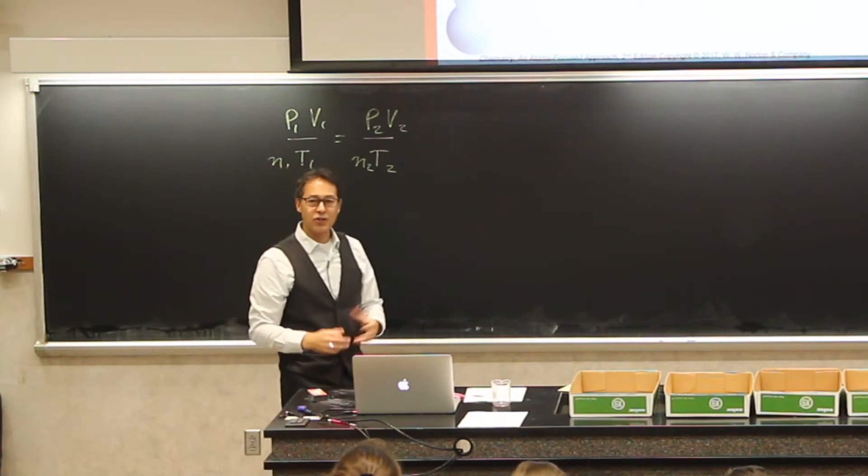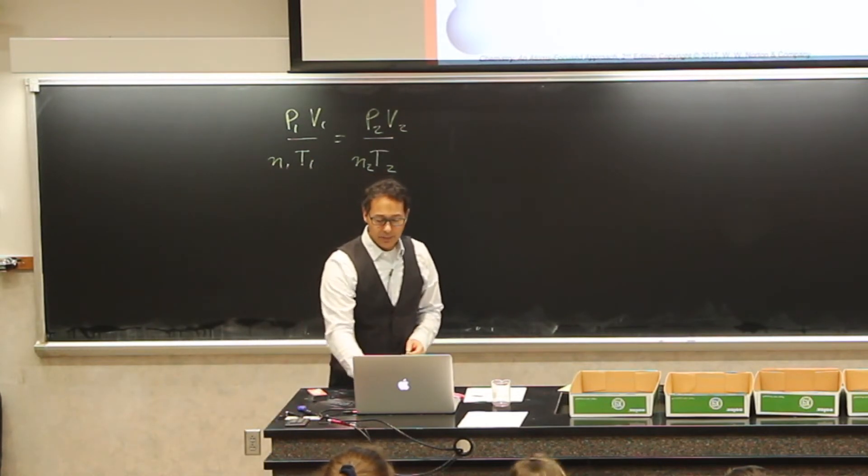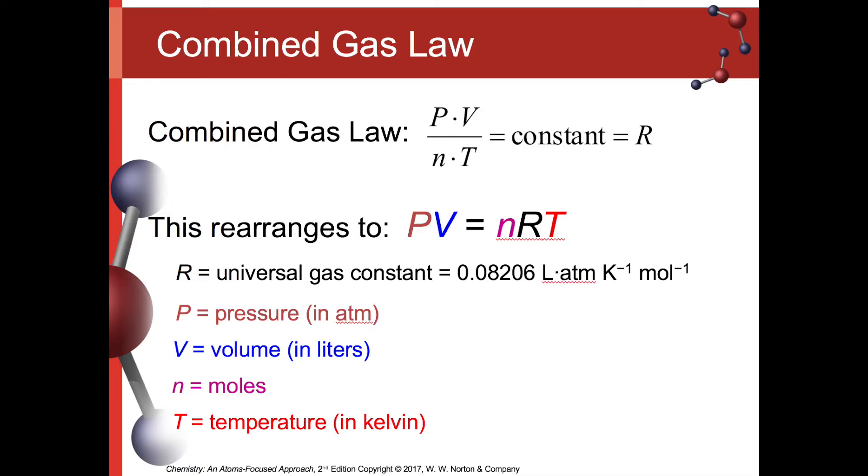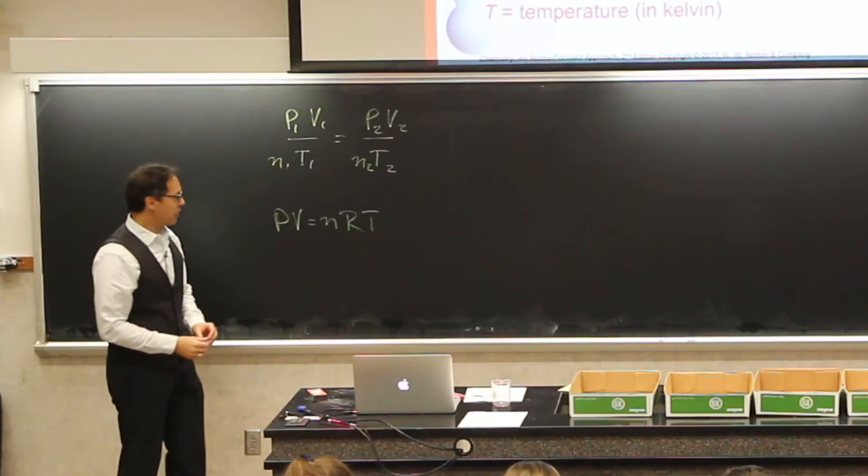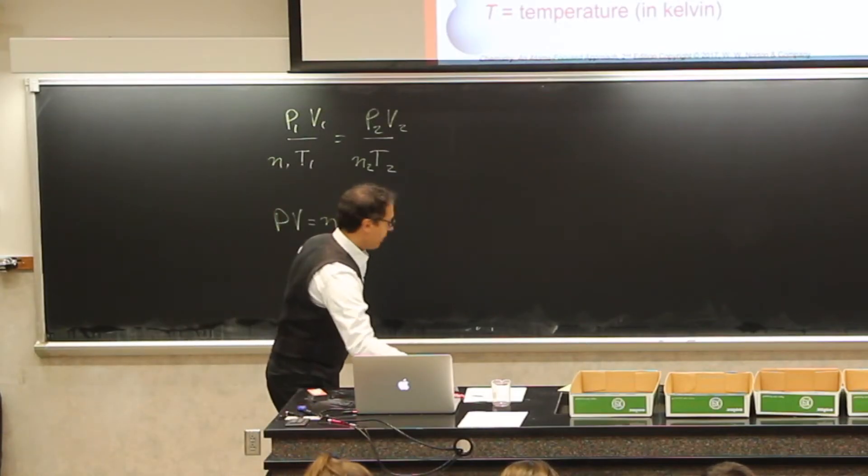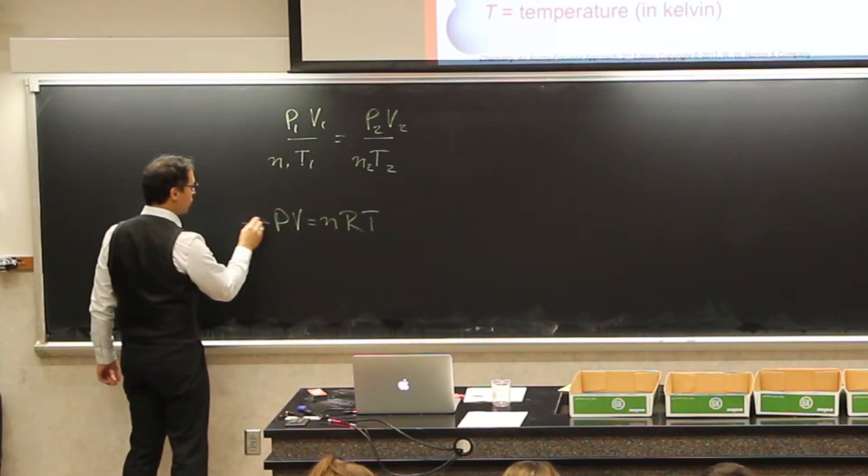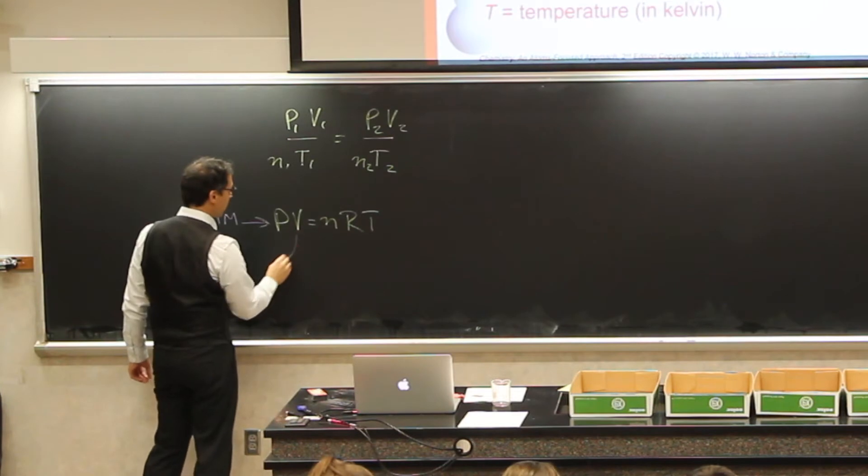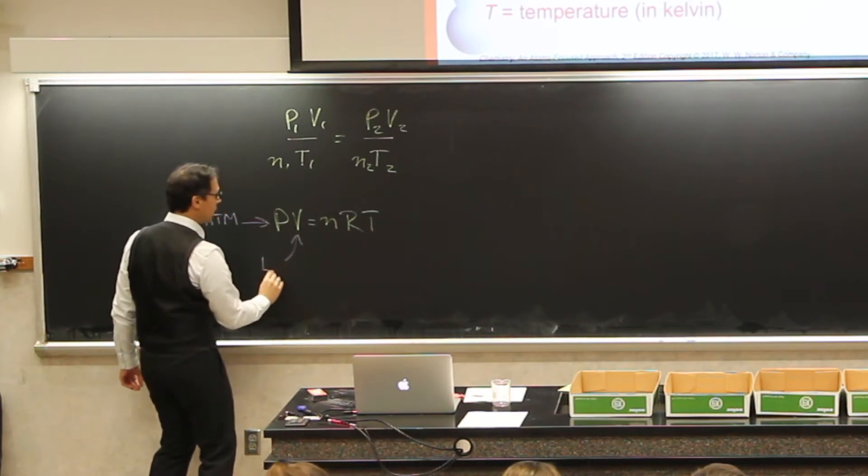Now, there is some mathematical jujitsu that can happen where we can arrange this equation and come up with something a little bit different: PV equals nRT. And in this equation here, we have some units. We have pressure, which should be measured in atmospheres, and we have volume, which should be in liters.